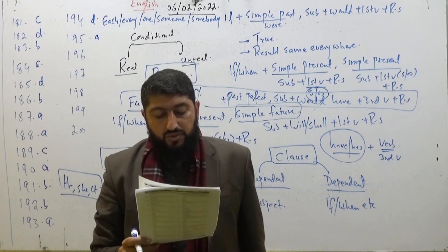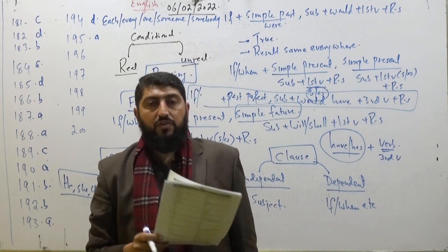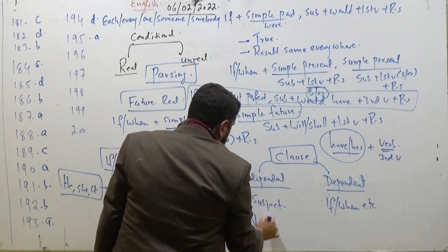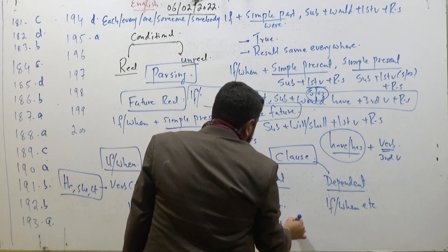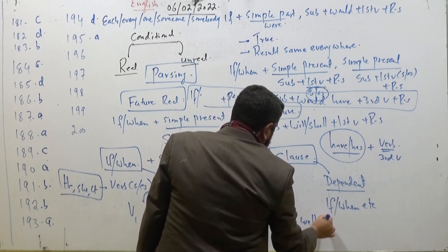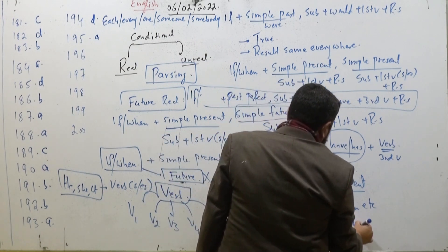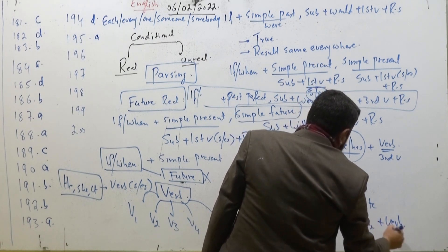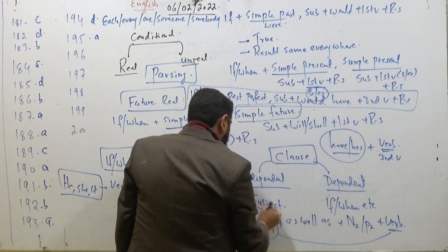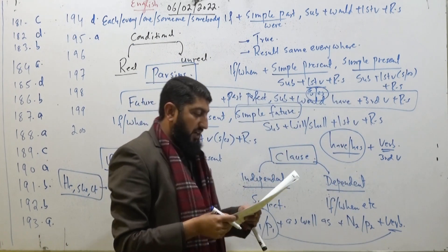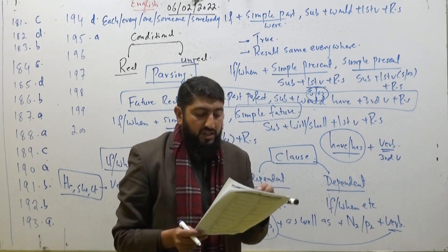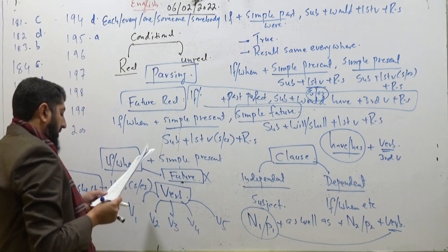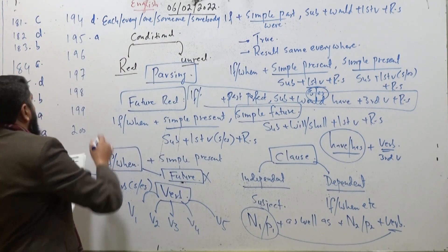MCQ 196: 'You as well as your friends are responsible for it.' Simple rule — if you have noun/pronoun one connected by 'as well as' to noun/pronoun two, the verb agrees with the first noun/pronoun. Here 'as well as' came, and with 'you' we use 'are'. So option number B is the correct one.